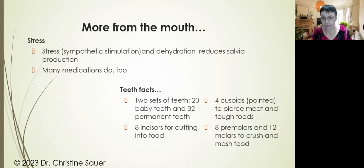Then there's teeth facts. We all usually have two sets of teeth. There's 20 baby teeth, they usually break out around one year of age. We have 32 permanent teeth. Some of us lose a few. The wisdom teeth are called that because they come the latest and hopefully by then we are wise. Then we have eight incisors for cutting into food, four cuspids or canines pointed to pierce meat and tough foods, and eight premolars and 12 molars to crush and mash food. We are very well equipped for the mechanical digestion part.